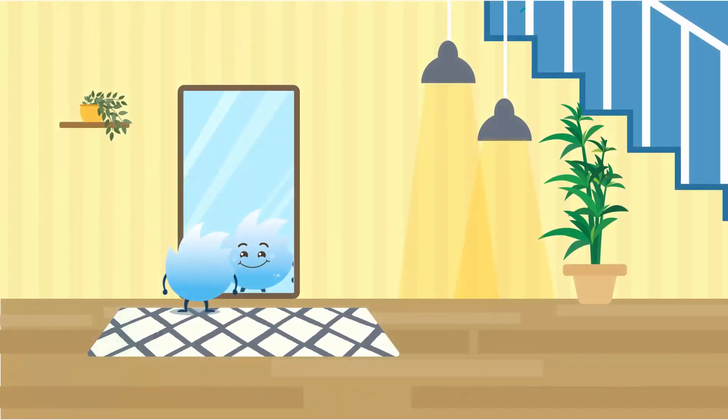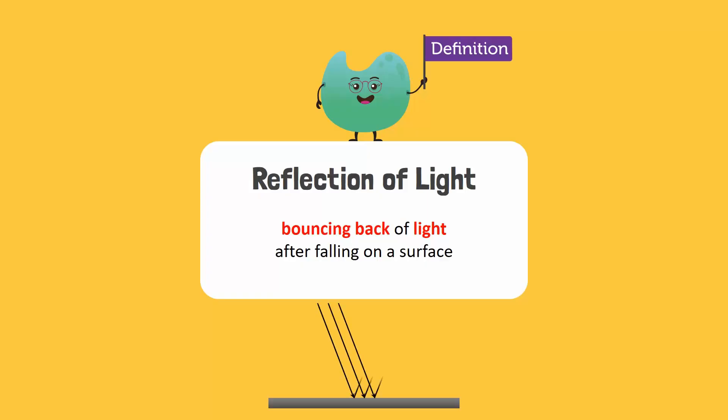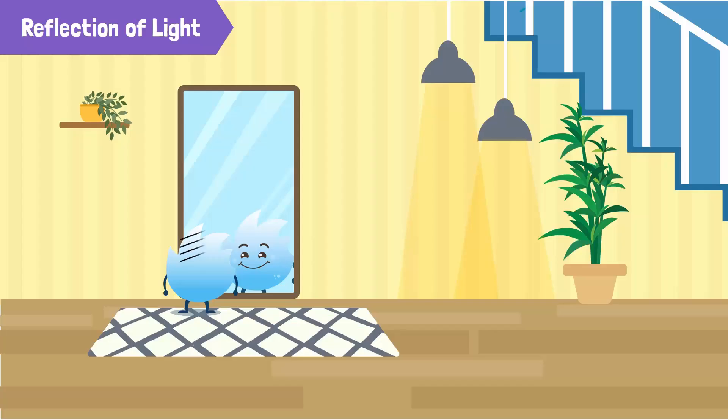What do you see when you stand in front of a mirror? I can see myself in a mirror. That's your reflection. We can see our reflection due to reflection of light. When light falls onto a shiny surface, it bounces back. This bouncing back of light is called reflection of light. The light inside the room falls onto this mirror and reflects due to its shiny surface. Thus, we can see our reflection.